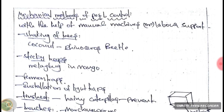Sticky traps are yellow-colored papers, because yellow color is very attractive to insects. We apply glue on the yellow paper and place it near the field where insect attack is more. The insects stick to the trap and we throw the traps away. Sticky traps are usually used for mealy bug in mango.